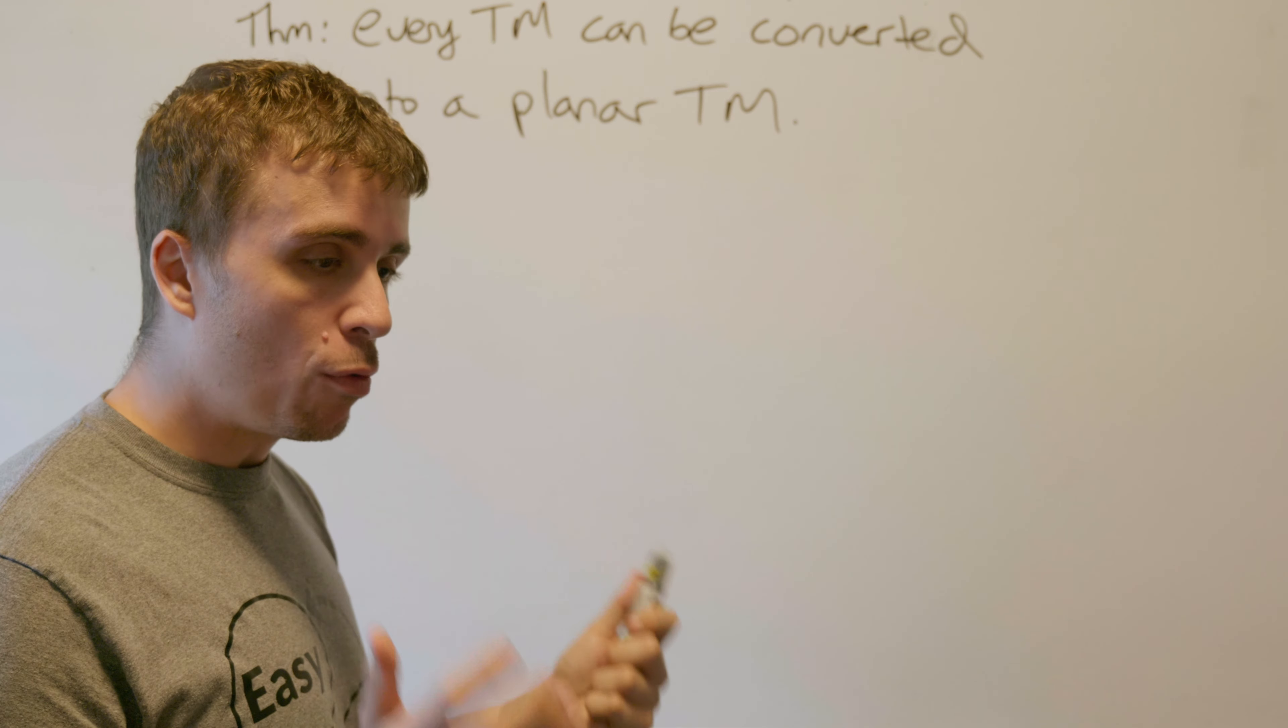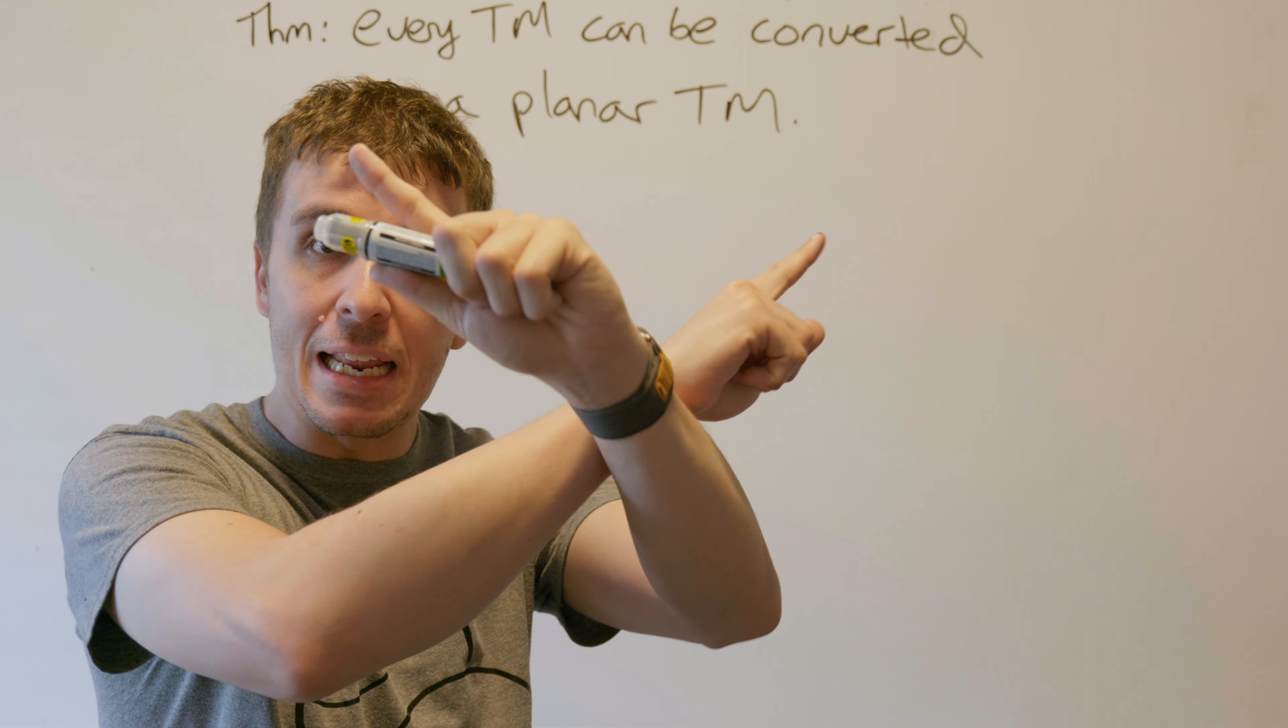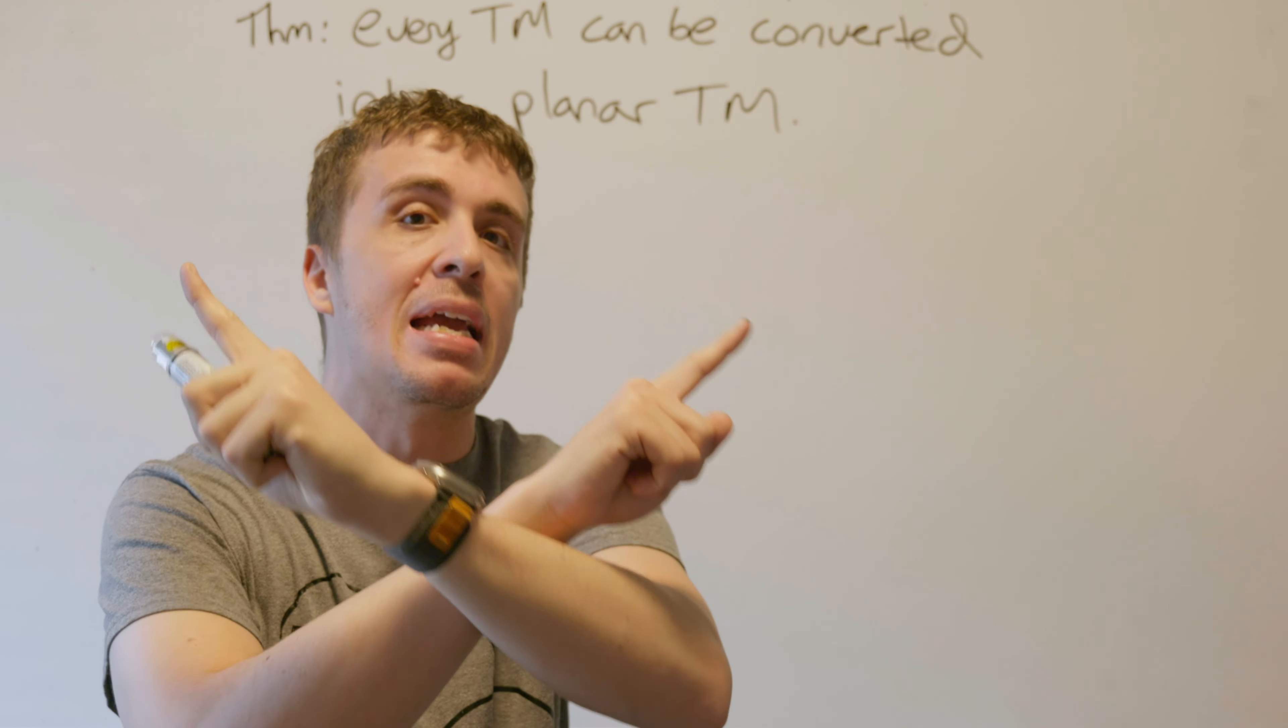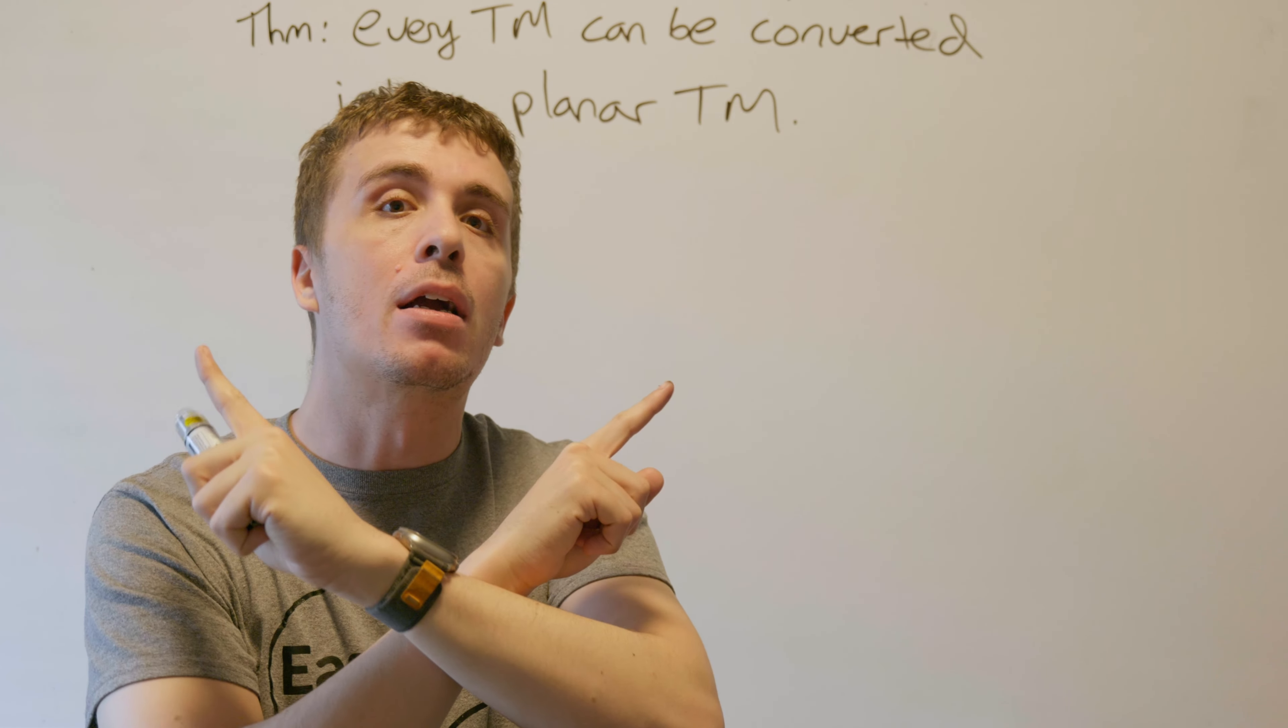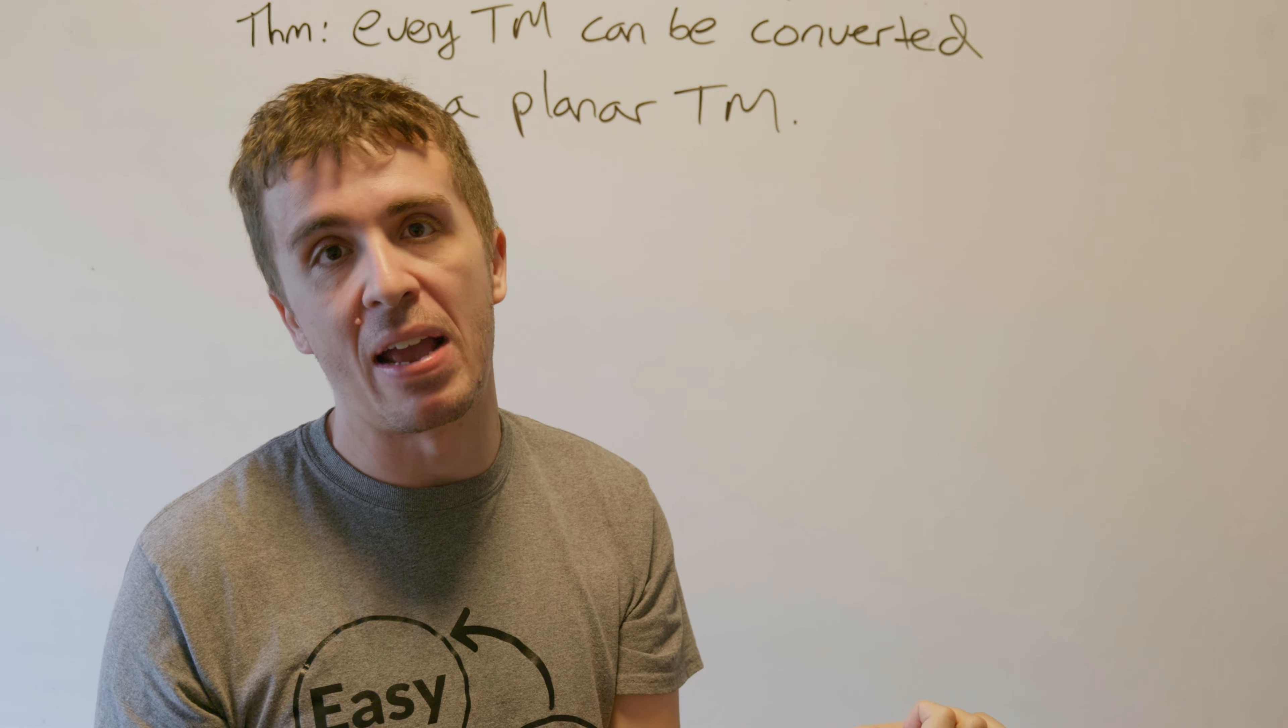Why is this true? What we need to do, or a recipe that we can do, is that if we have any two edge crossings in a Turing machine, we can convert it into an equivalent Turing machine that doesn't have any edge crossings.